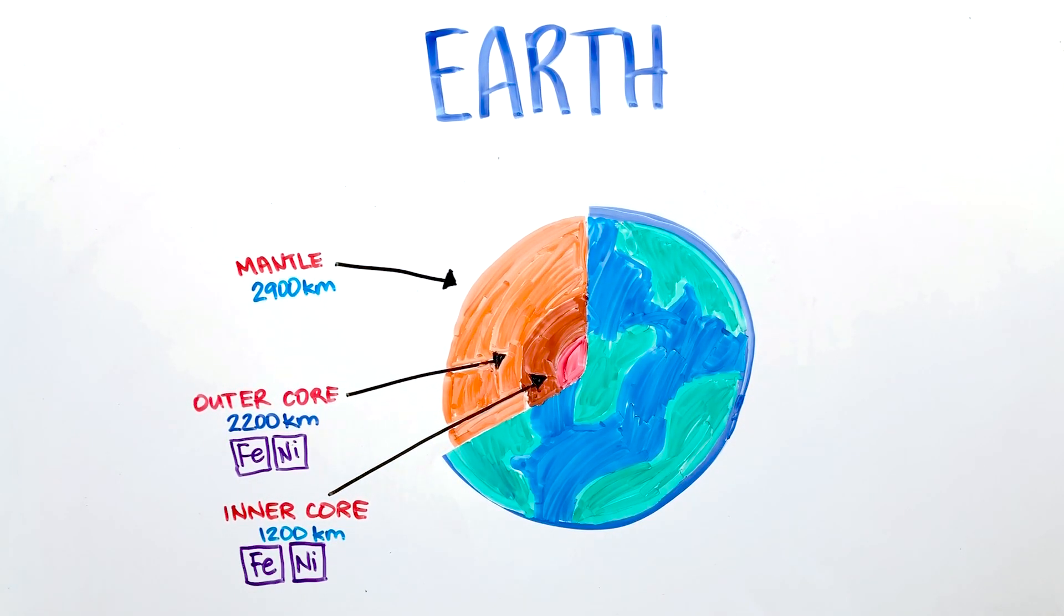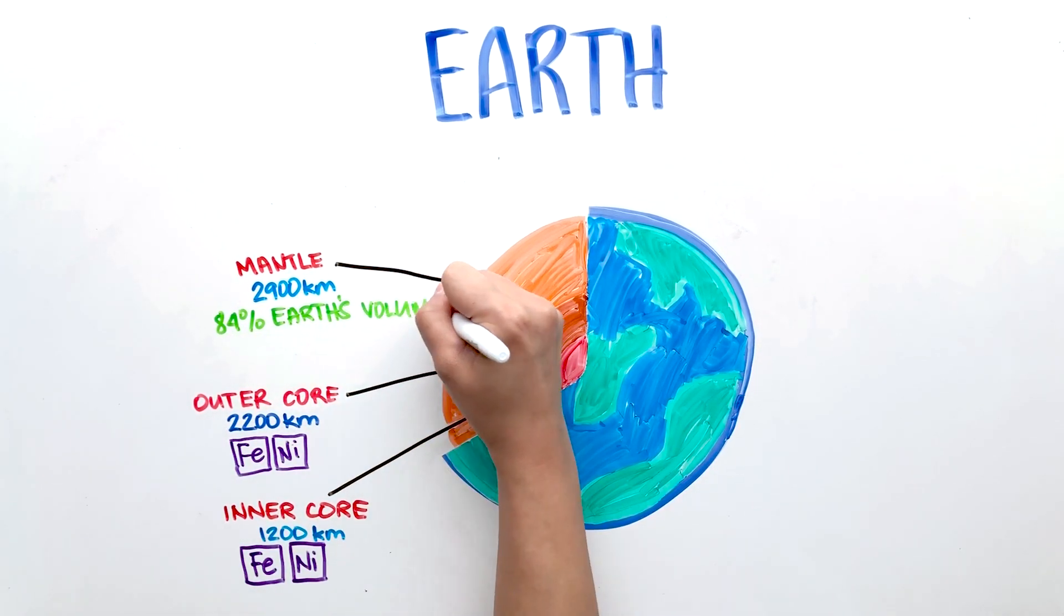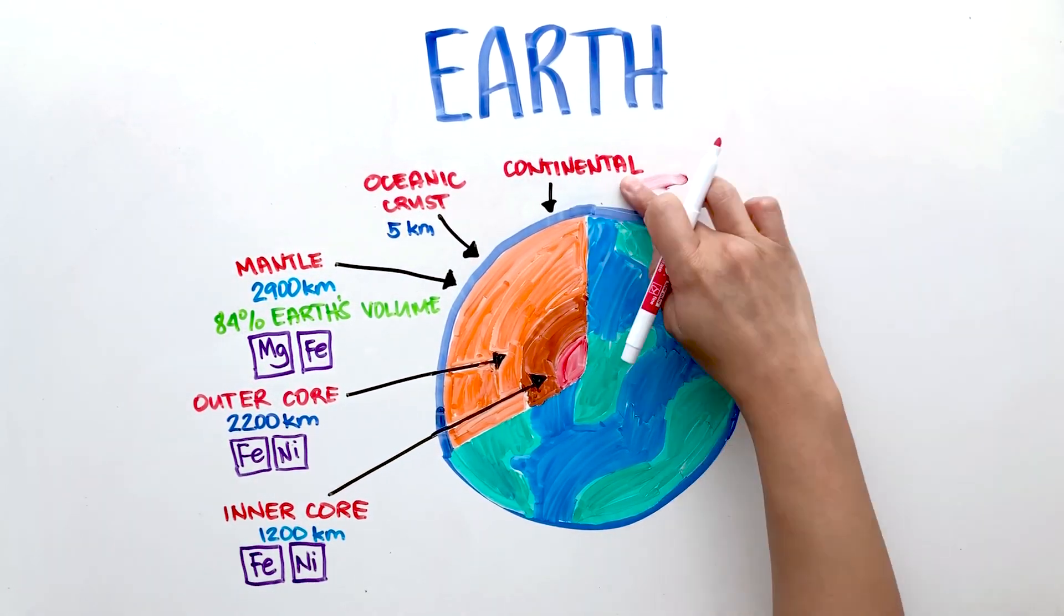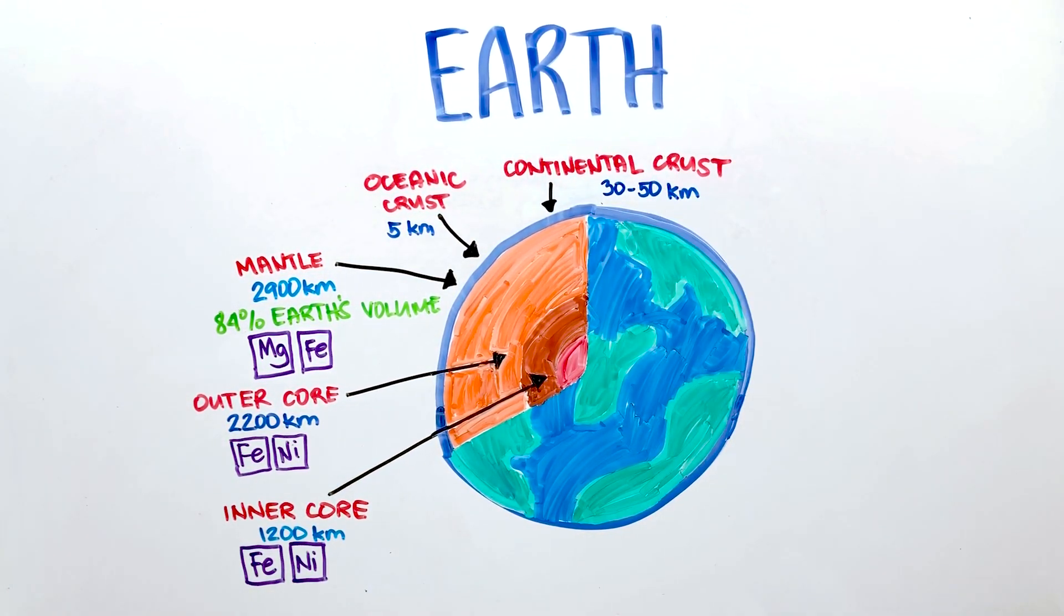The mantle makes up 84% of the Earth's volume and is composed of magnesium and iron. Then there's the oceanic crust and the continental crust. Their overall density is less than the mantle, so technically they float on the mantle.